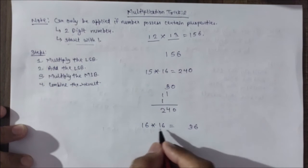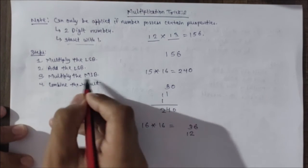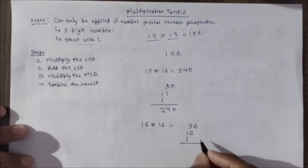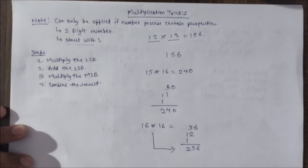Add the LSB. 6 plus 6 is 12. Multiply the MSB. 1 multiplied by 1 is 1. Combine result: 6, 5, 2. 16 multiplied by 16 is 256.